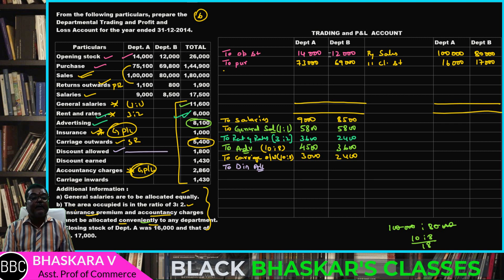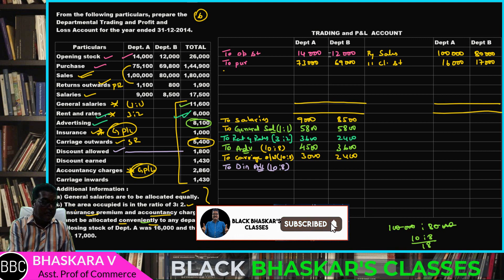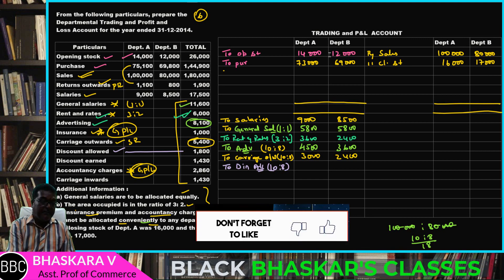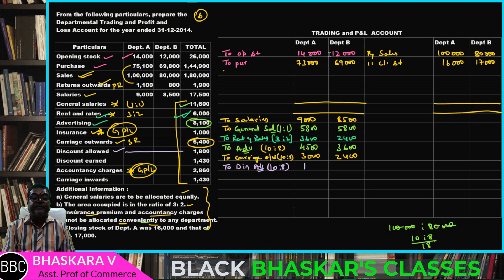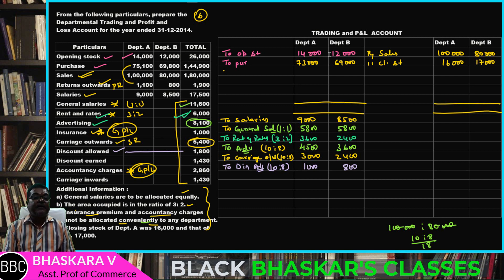So carriage outwards done. Then discount — discount: 1,800. Divided by 18 into 10 equals 1,000 rupees; into 8 equals 800 rupees. Total: 1,000 plus 800 equals 1,800.